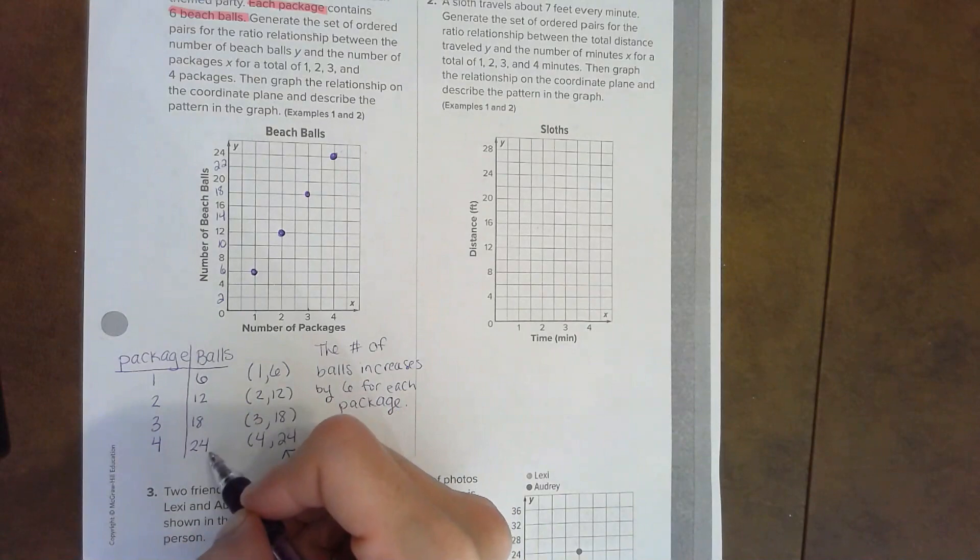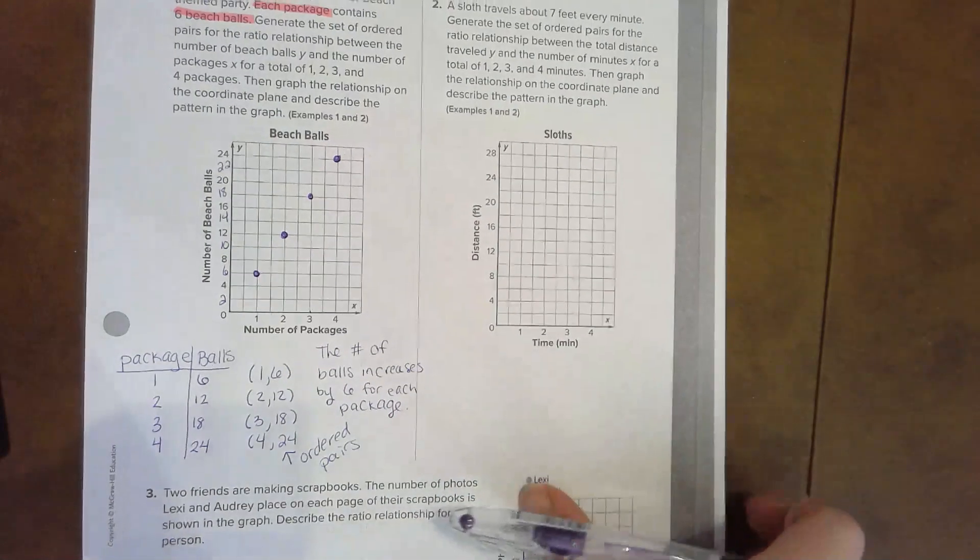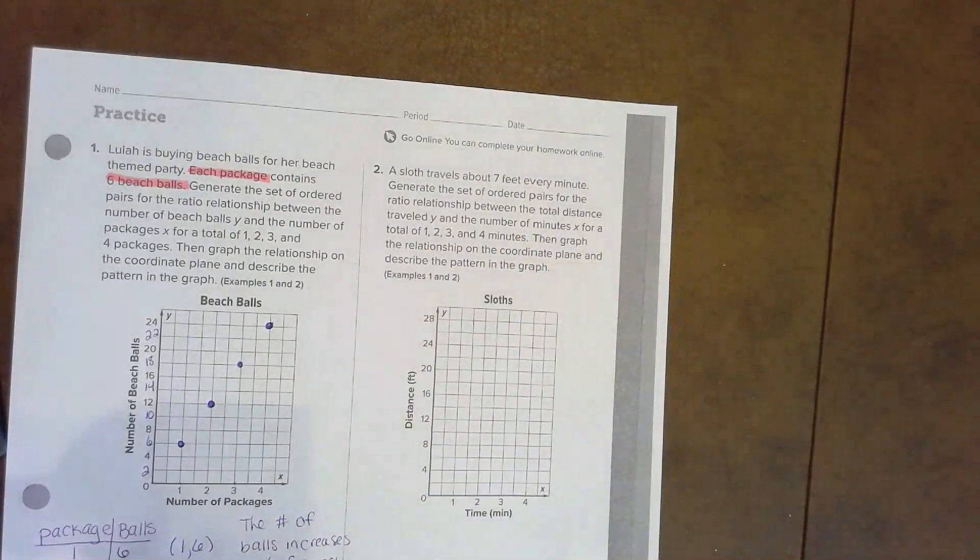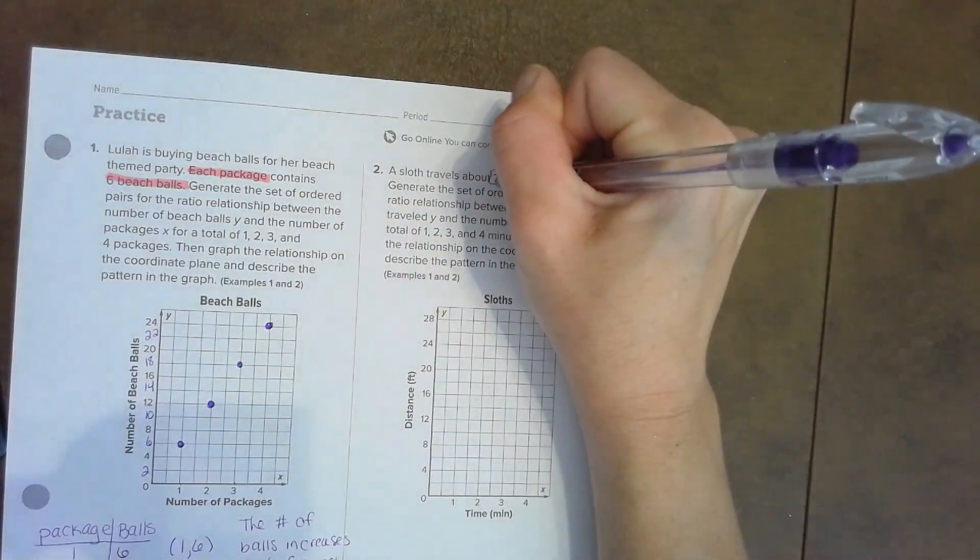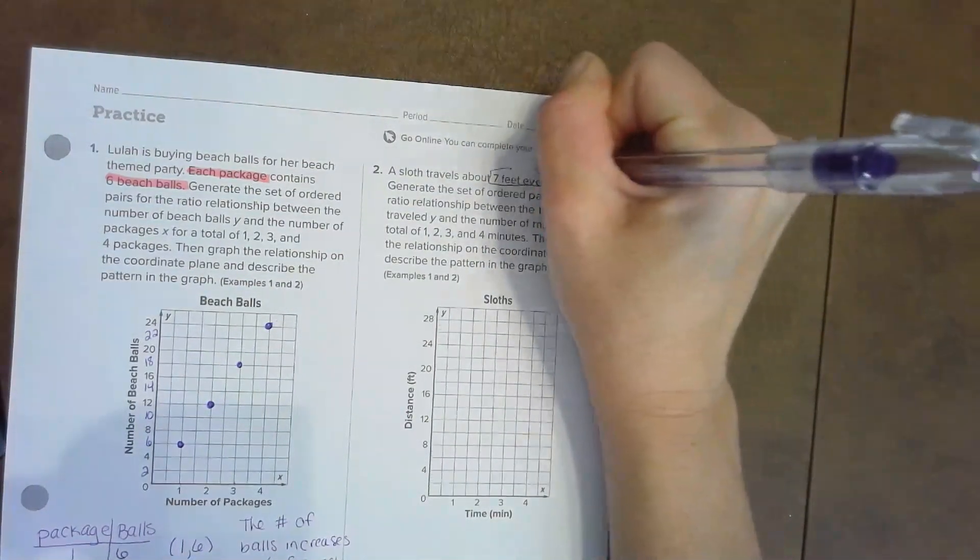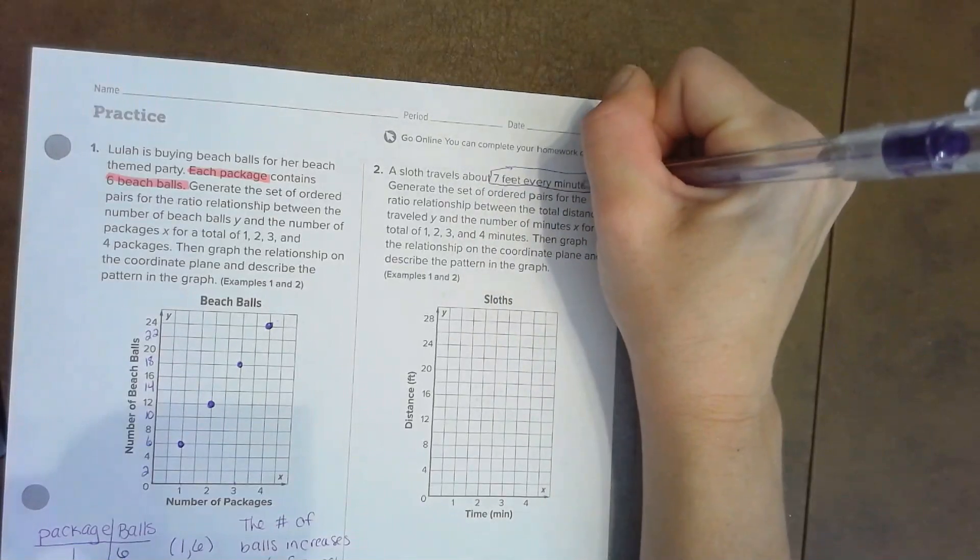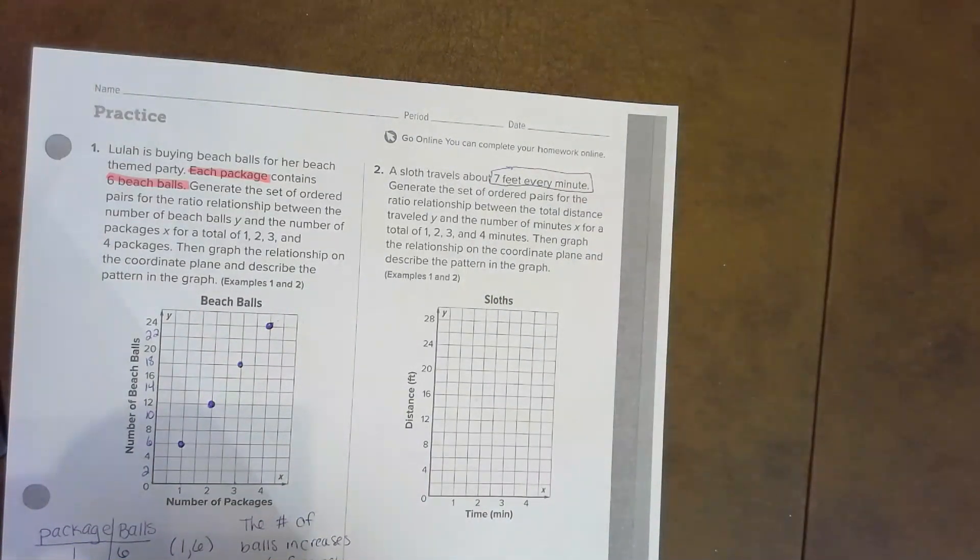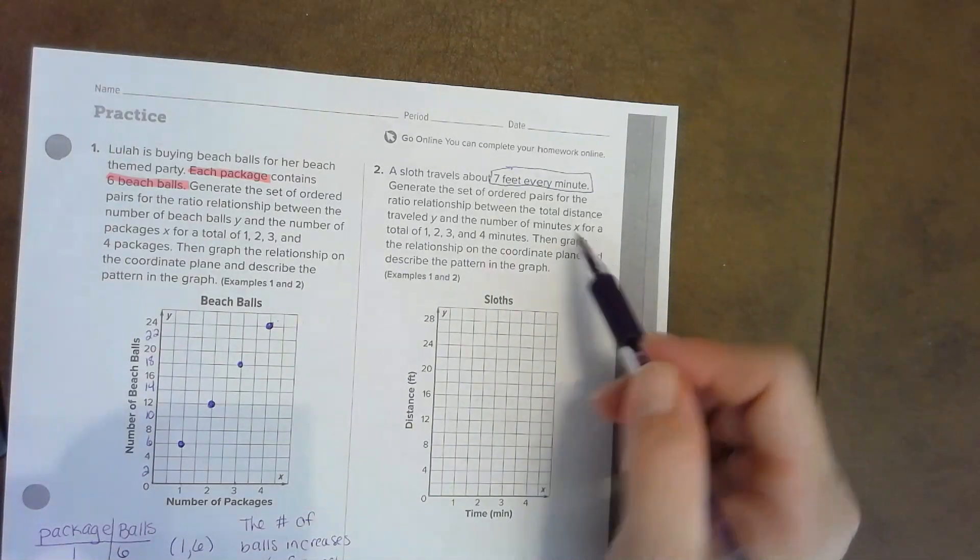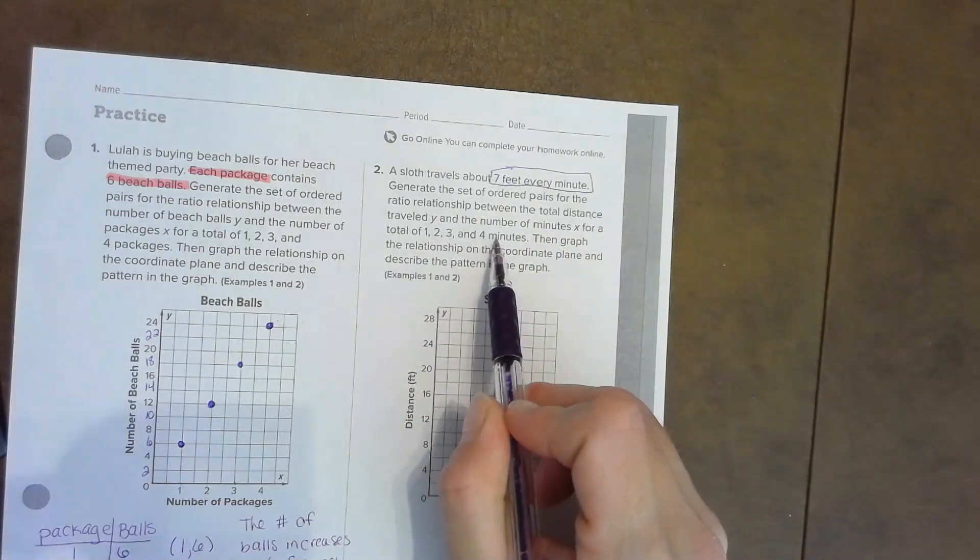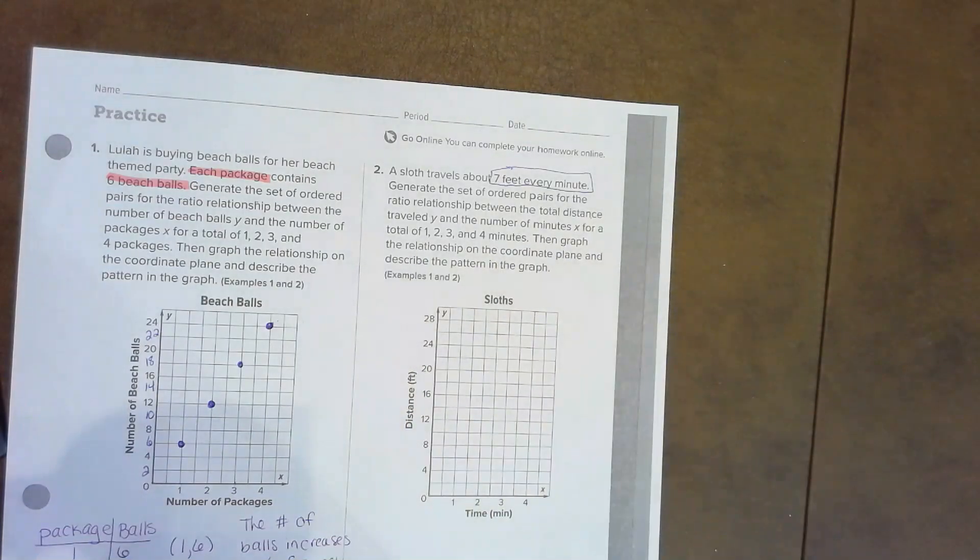Let's read the next one. A sloth travels about seven feet every minute—there's my ratio relationship, seven feet, one minute. Generate a set of ordered pairs for this relationship between the total distance traveled and the number of minutes, and it wants you to do up to four minutes. Graph it and describe the relationship.